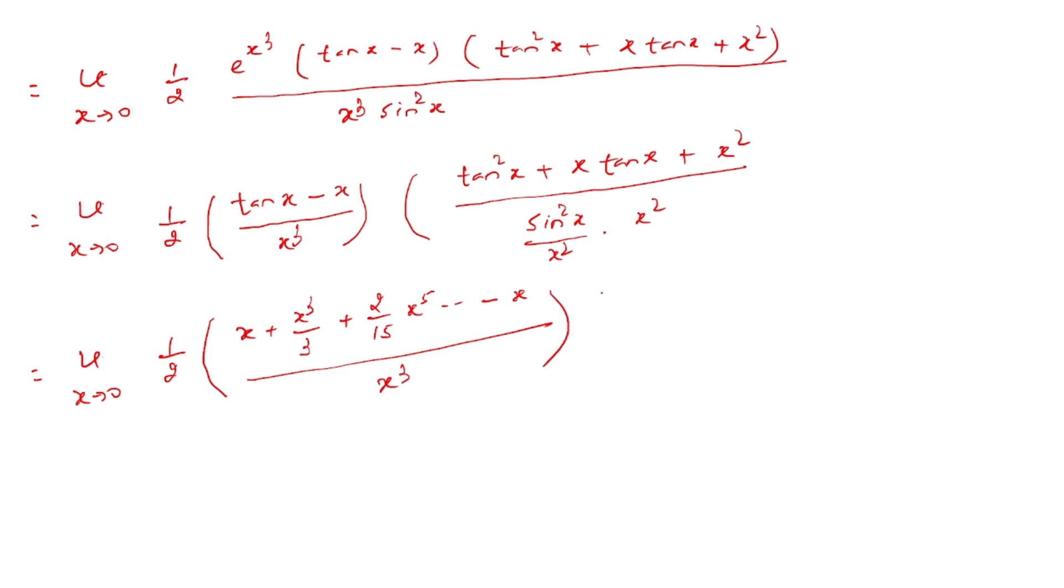These limit terms approach 1. Overall, this becomes 1/2 times (after canceling x and taking x³ common) 1/3, giving us 1/2 as the final value. Therefore, the common ratio r equals 1/2.